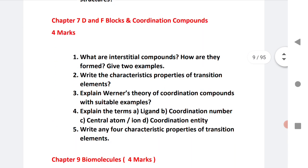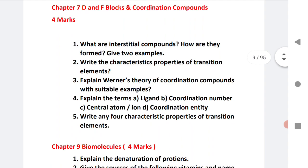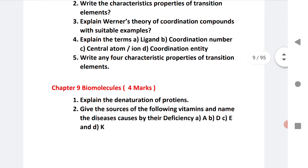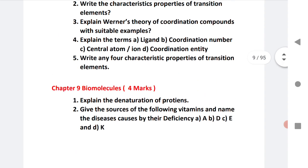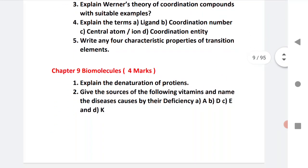Next D-Block. I have given 5 questions, very important. All are very important questions. What are interstitial compounds? How they form? Give two examples. This is very important. And the fifth one is also very important. The most important is Werner's theory of coordination compounds. Let us go to the next chapter. And this is for both the states.